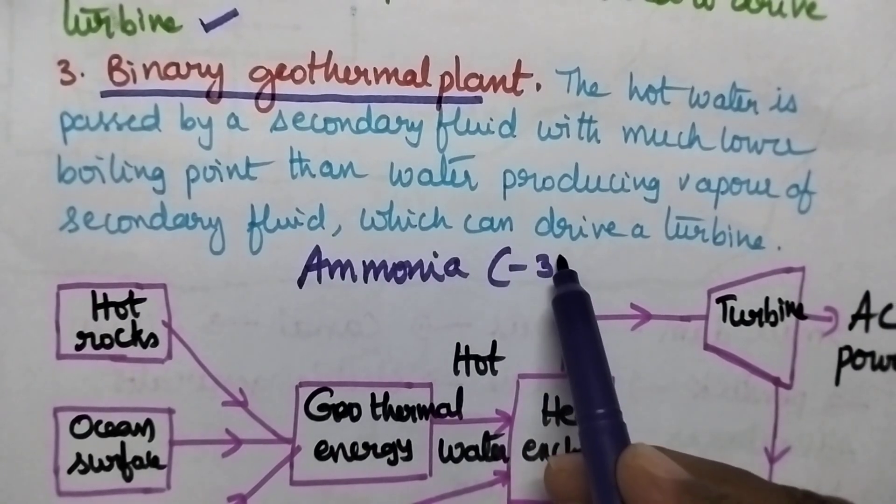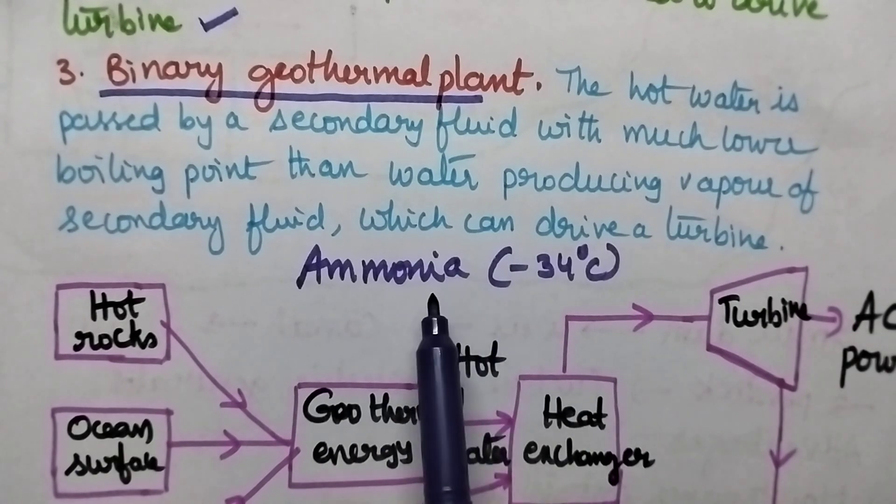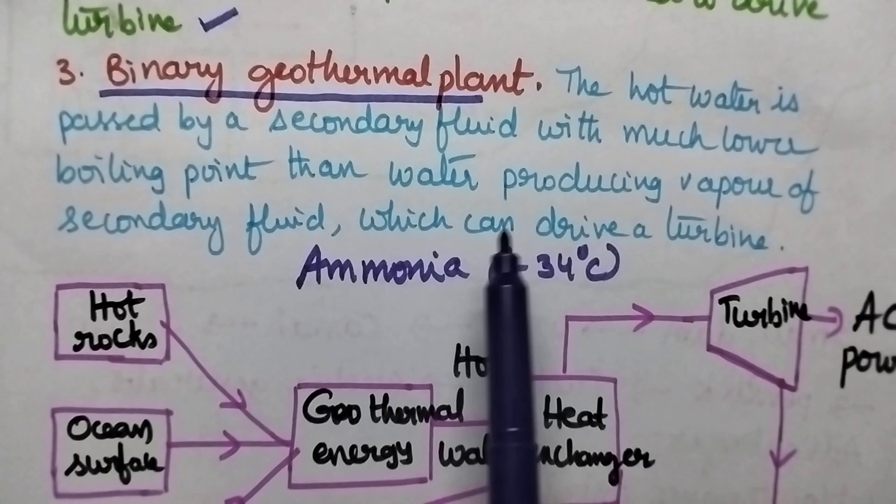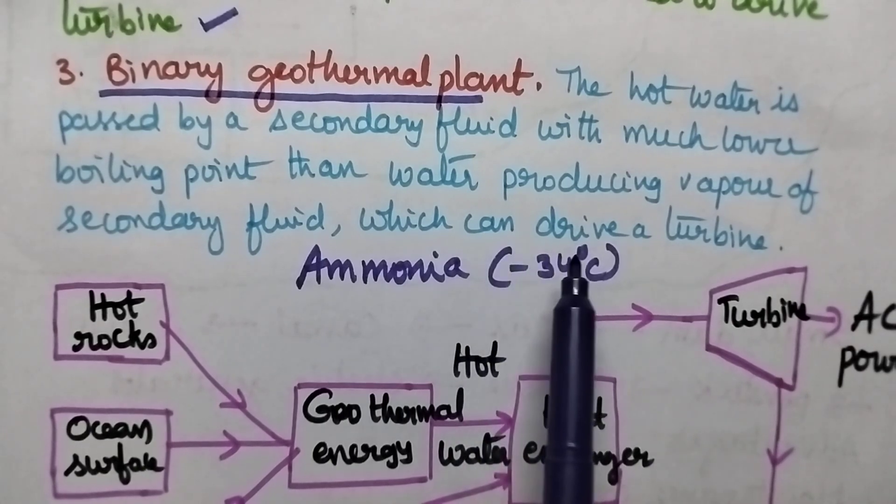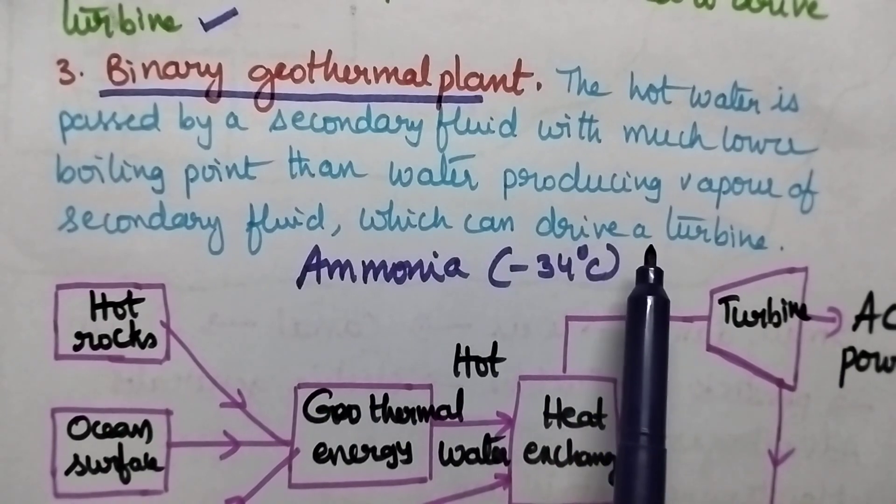When the vapors of ammonia are used, they rotate the turbine many more times, resulting in more electricity being produced.